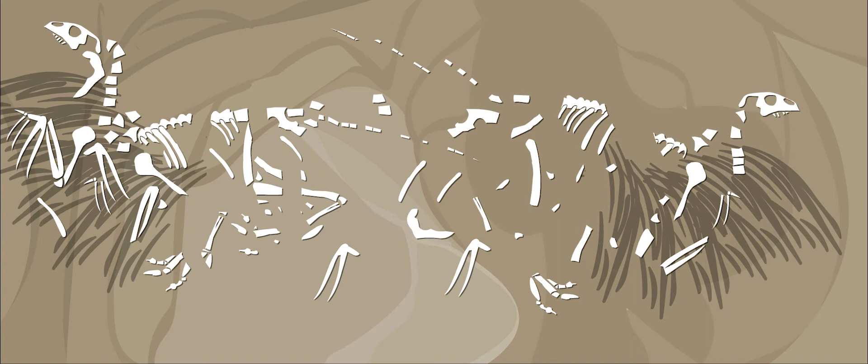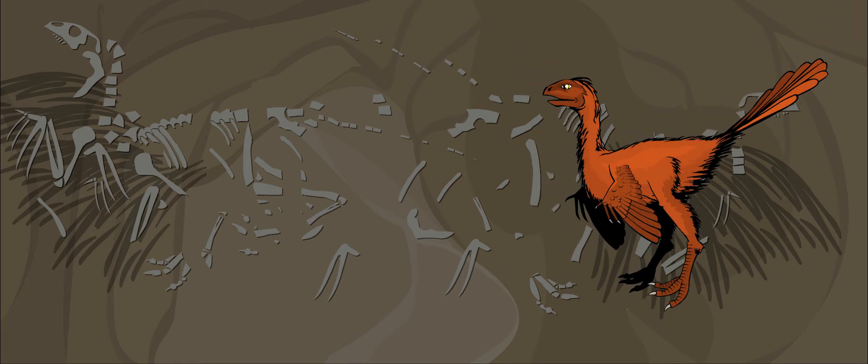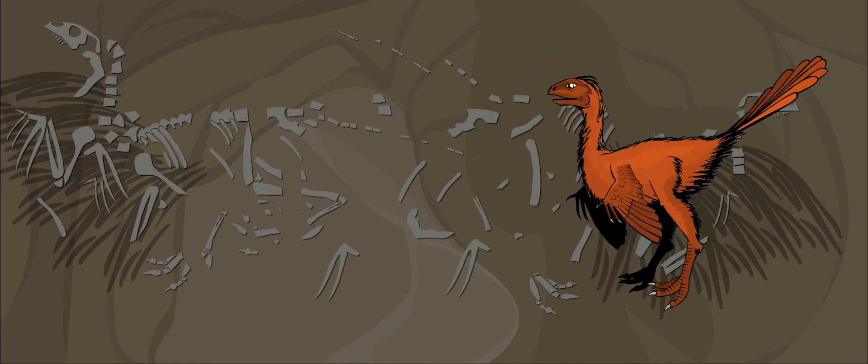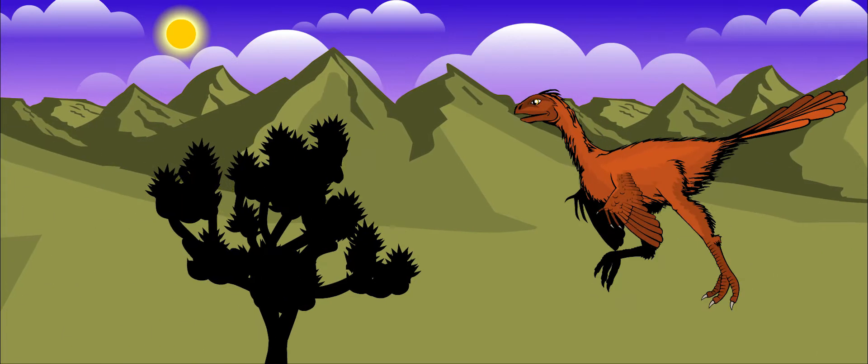The bones of a Caudipteryx were discovered in 1998. It was a very exciting find for paleontologists. It was a small theropod dinosaur like many others during this period. It ran on two legs, ate meat, and had sharp teeth.